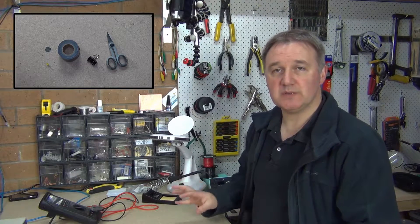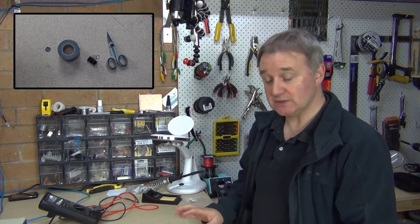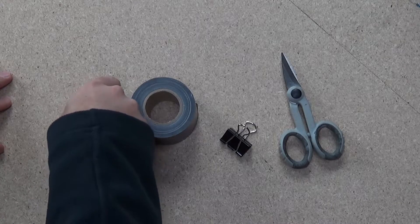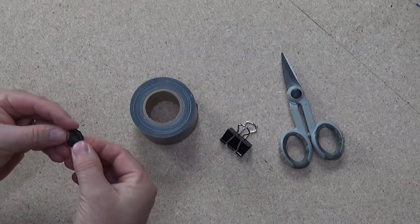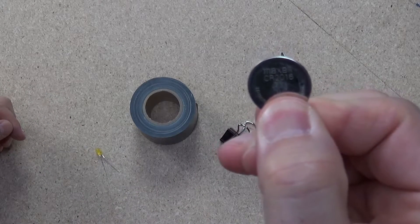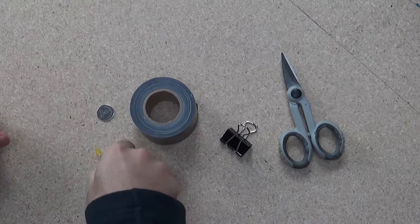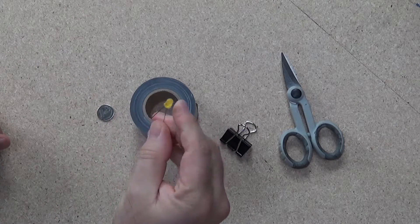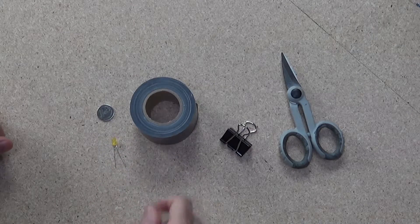So to build this super simple book light all you actually need is a little coin cell battery, a 3 volt battery, this one's a 2016, an LED, any color will do, white's better but I don't have any white so I'll just use a little yellow one in this example.